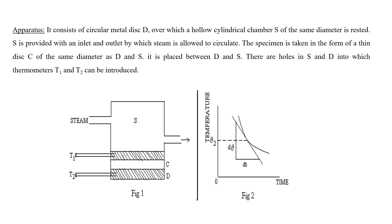Between the lower disc D and the upper steam chamber S, a bad conductor specimen C is inserted. The specimen C is taken as a thin disc of the same diameter as D and S, and is placed between them. Two thermometers are introduced into holes in S and D to record the temperature at any instant.